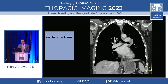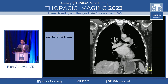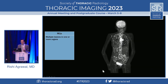M1B is a single lesion in a single organ — also called oligometastatic disease. In one patient with a left upper lobe tumor, there's a single lesion in the liver, representing M1B. M1C is multiple lesions in one or more organs.